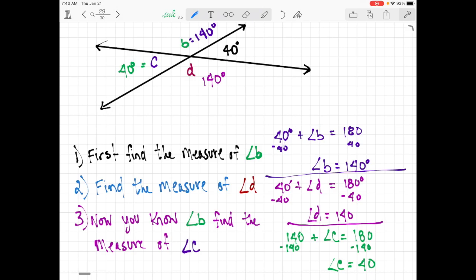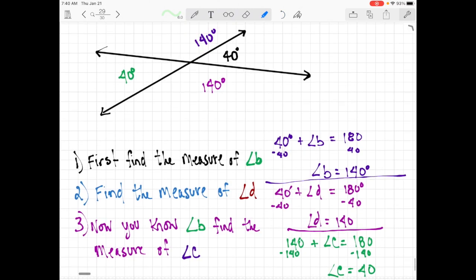So this is kind of interesting. If we get rid of these letters and just have the angle values, we see that the opposite angles, 40 degrees, 40 degrees, those are congruent. 140 degrees, 140 degrees, they're on opposite sides. Those are also congruent. We call these vertical angles, angles that are formed by two intersecting lines. And the opposite angles, the angles across from one another, are always congruent.